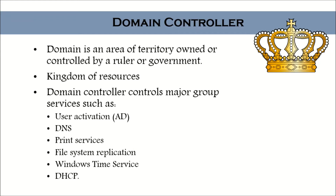In a corporate environment, they will make one primary server — which they call the primary domain controller — as the domain controller of your environment. That is going to control all the computers in your environment. Every time you build a computer, you have to register it to the domain — essentially telling the domain: 'Can you please register me with you?'